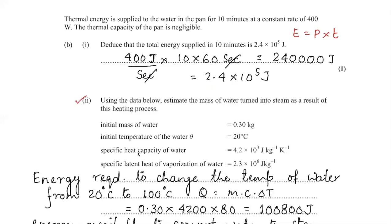That was the first part of the question — they simply asked you to calculate the total energy supplied in 10 minutes. Use the formula energy equals power times time, where power is 400 watts (400 joules per second) and time must be converted to seconds.